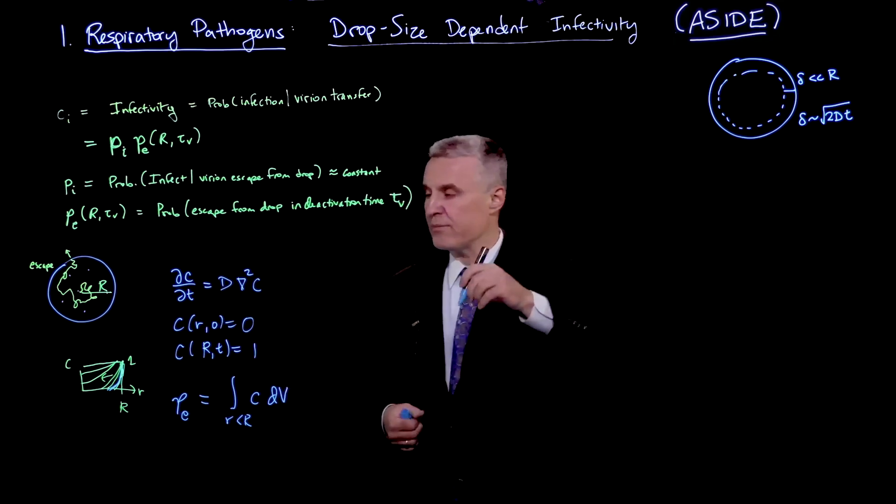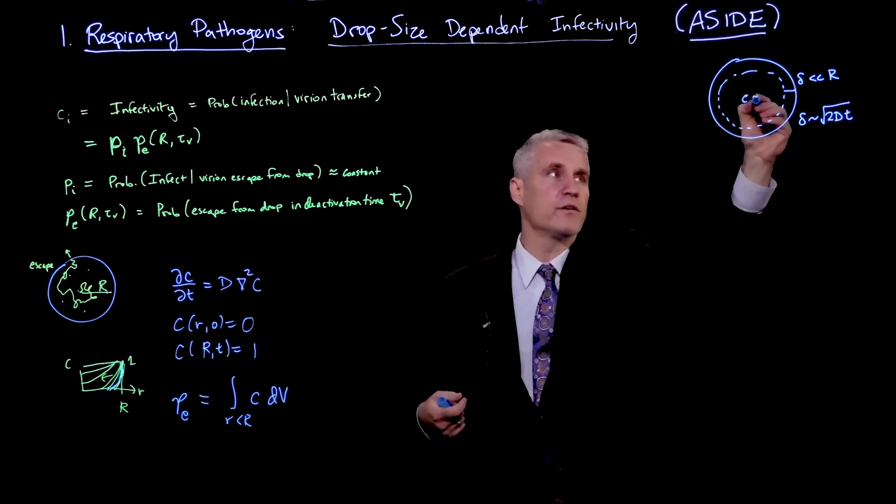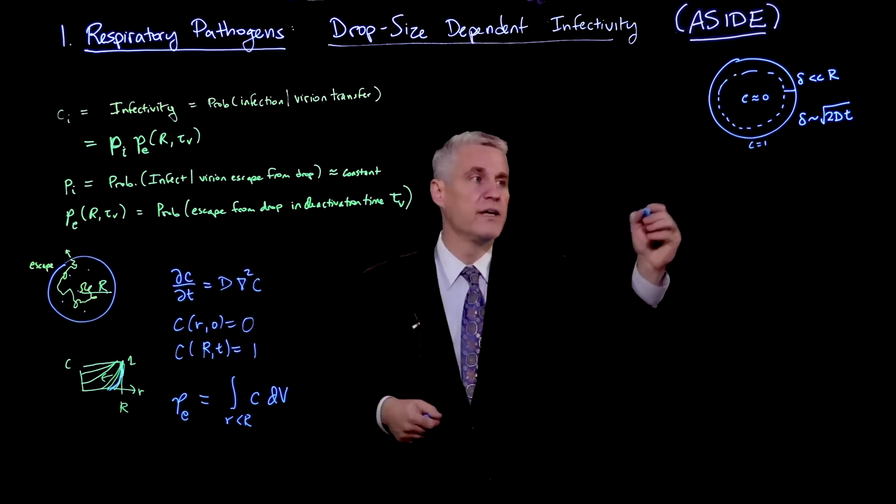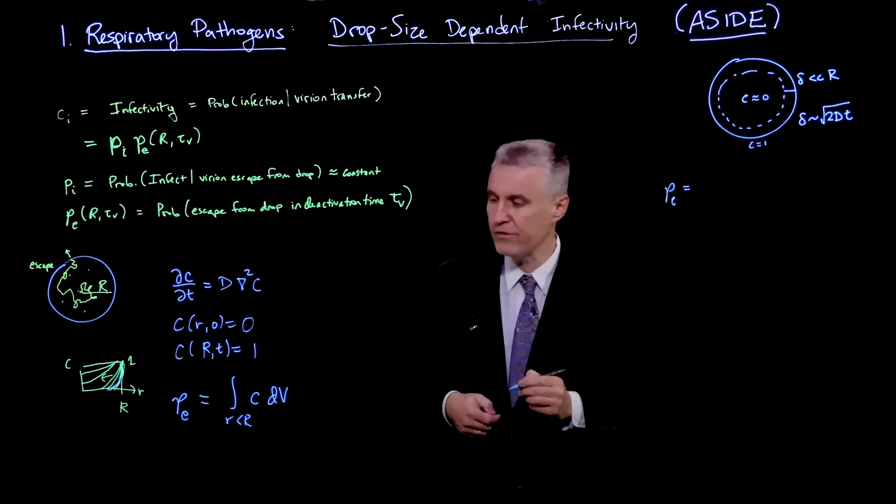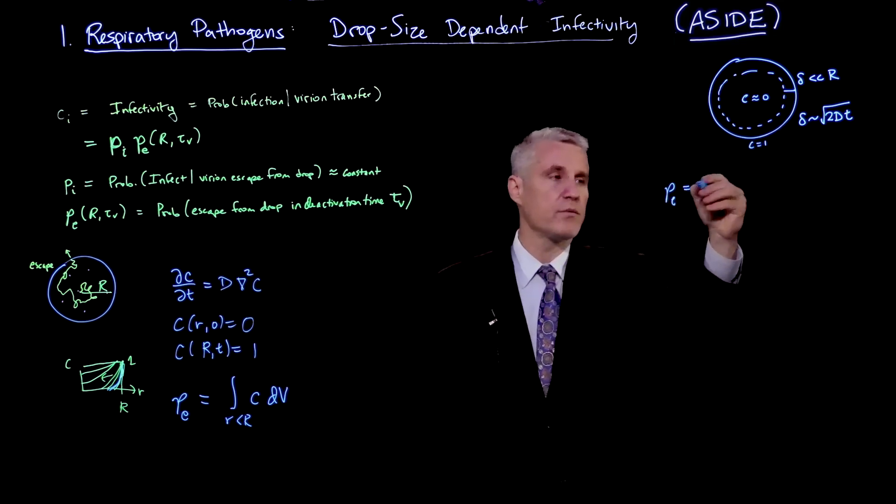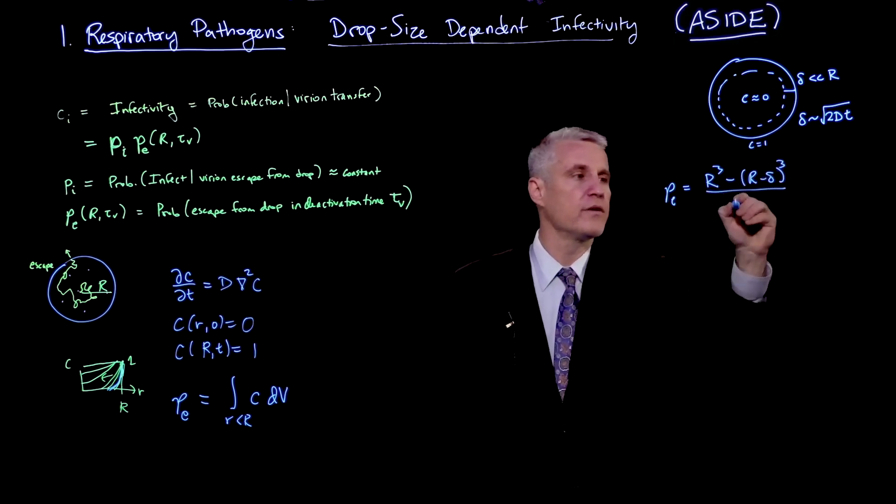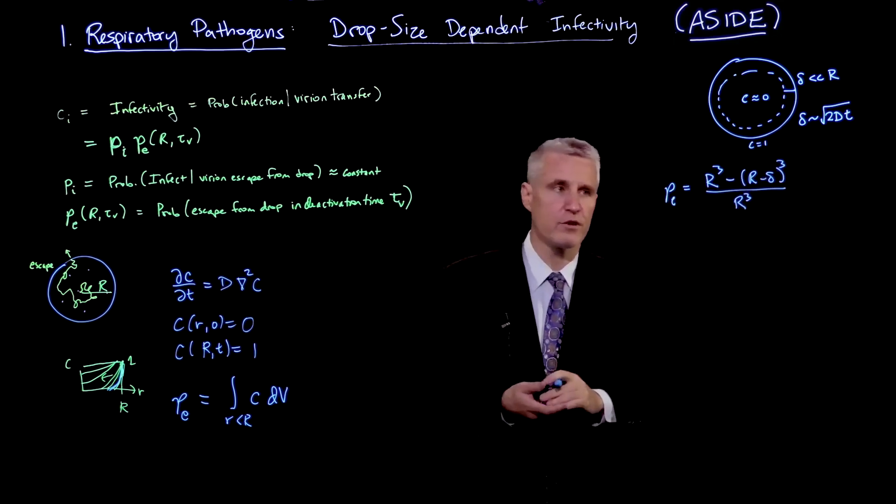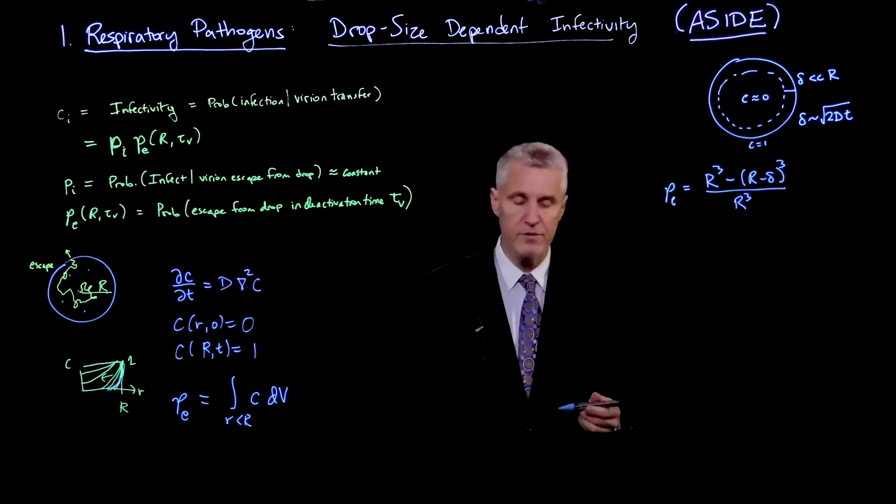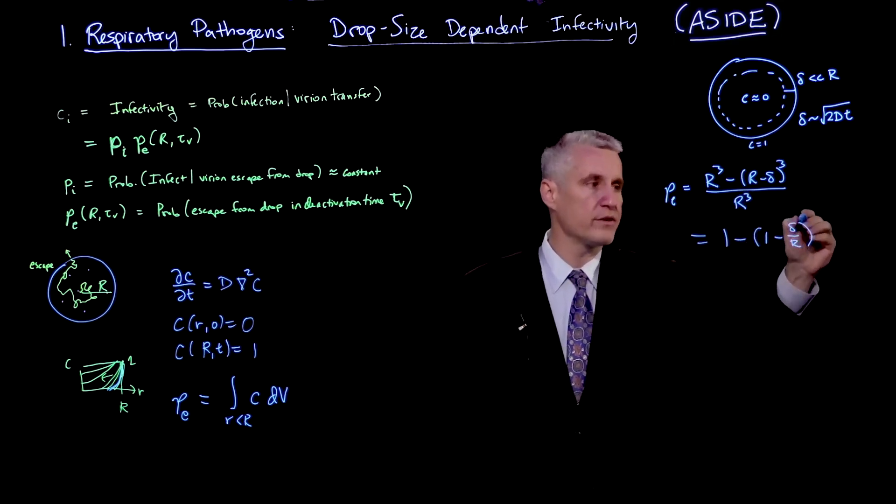To calculate this integral of the concentration field, I basically have a domain at the outside here where this concentration variable is near 1 and a central region where it's approximately 0. Therefore, I can write that this Pe is, roughly speaking, the volume of that spherical annulus. That would be (R³ - (R-δ)³) / R³. Each of the volumes has a 4π/3 which I've canceled off. This is the volume of the total sphere minus the volume of the inner sphere.